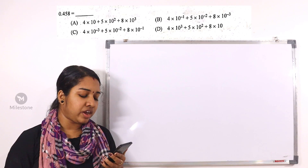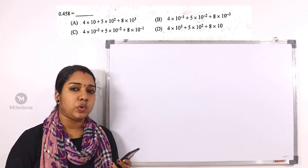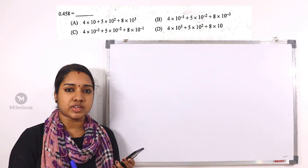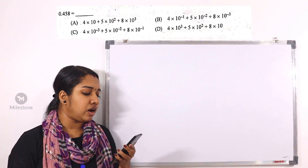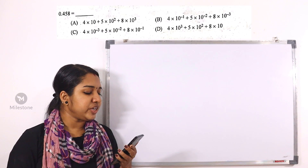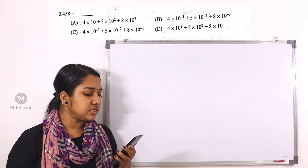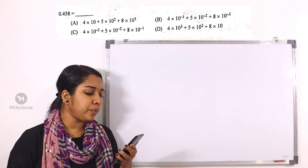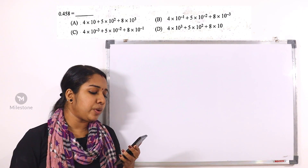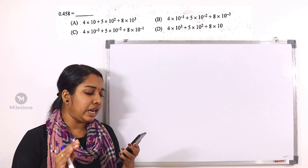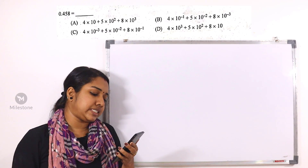0.458 is equal to what? We will check the options. The first option is: 4/10 plus 5/10 raised to 8 plus 8/10 raised to 3.